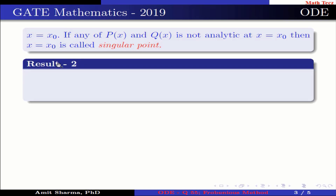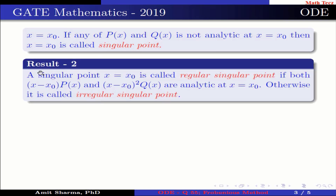Result number 2: A singular point x = x₀ is called a regular singular point if both (x − x₀)p(x) and (x − x₀)² q(x) are analytic at x = x₀; otherwise it is called an irregular singular point.